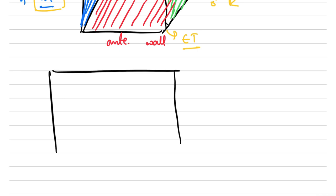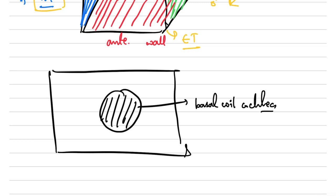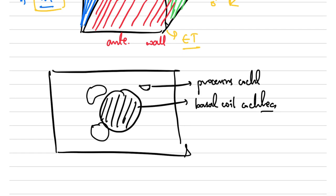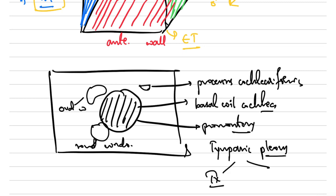The key structures of the medial wall are: the promontory, which is due to the basal coil bulge of the cochlea; the oval window; the round window; and the processus cochleariformis. The promontory is innervated by the tympanic plexus, which is formed by the Jacobson's nerve branch as well as sympathetic supply from nerves surrounding the internal carotid artery.